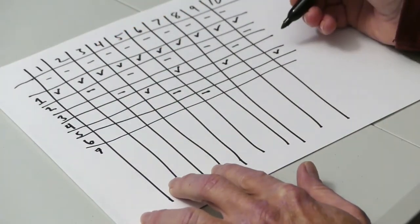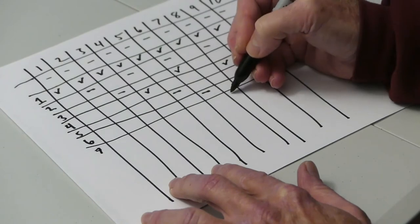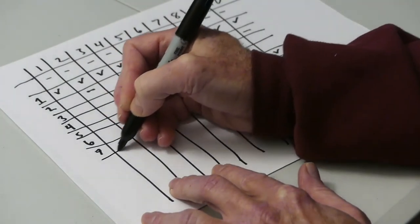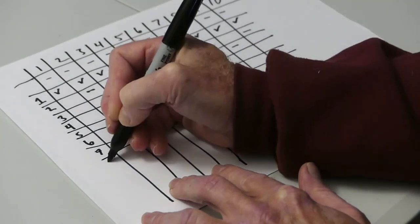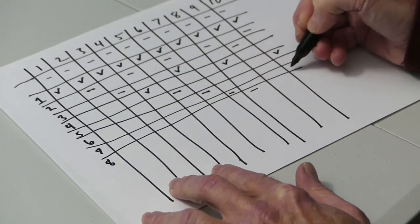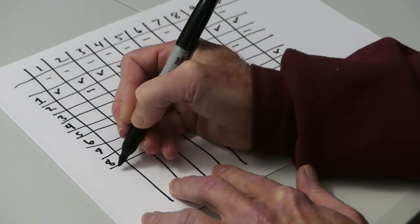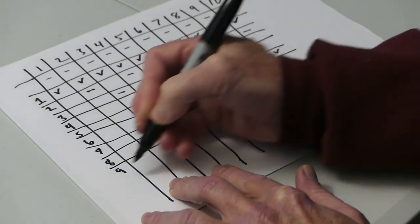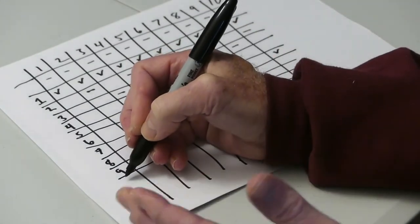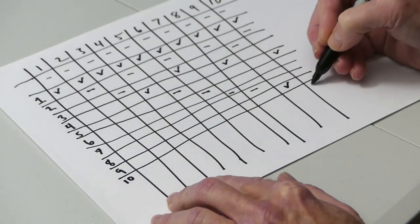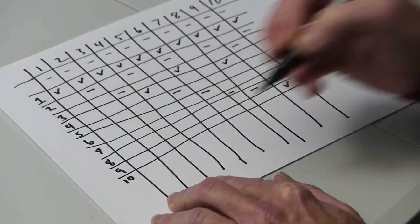Same with student number 7. Starts at locker 7 and closes it, and they're finished. Student number 8 starts at locker number 8 and closes it. Student 9 starts at locker number 9 and opens it. And for our example, finally student number 10 starts at locker 10 and closes it.